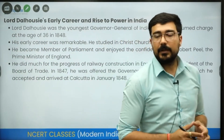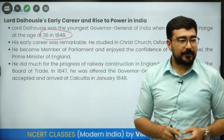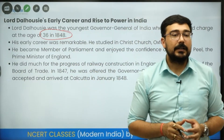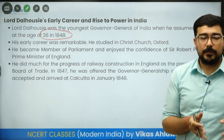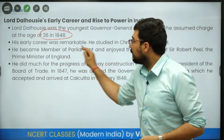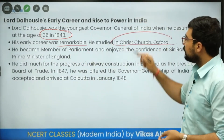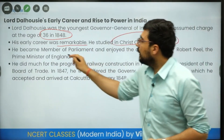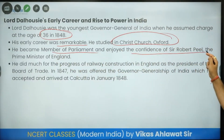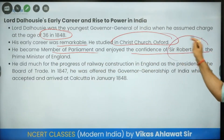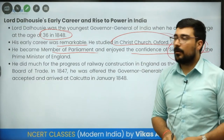He became Governor General at the age of 36. Before him, the people in that role were very aged. His career was remarkable — he studied at Christchurch in Oxford, became a Member of Parliament, and enjoyed the confidence of Sir Robert Peel, who was the Prime Minister of England.